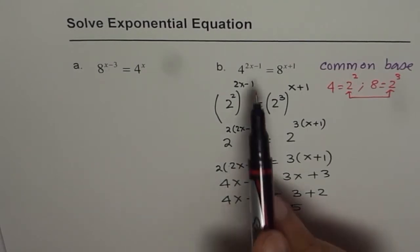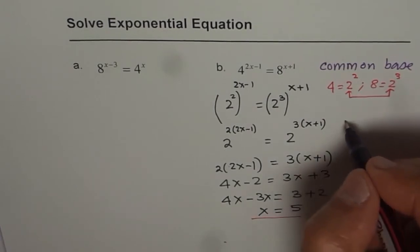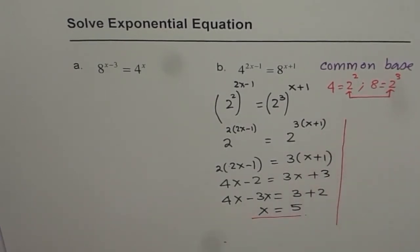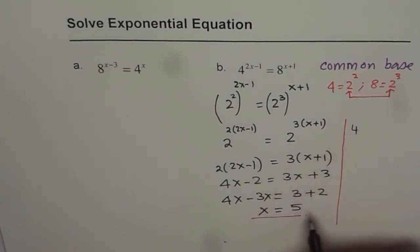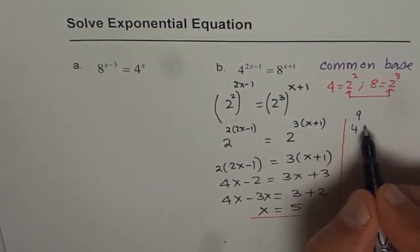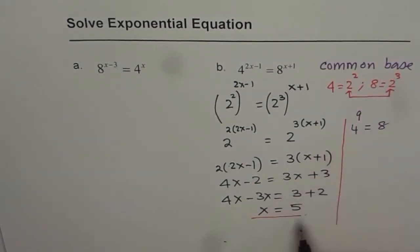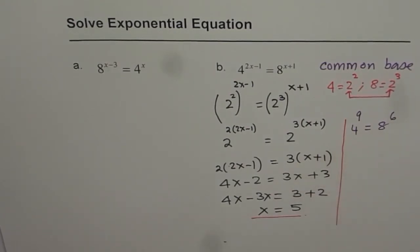Now it's a good idea to place 5 here and check your answer. You can always place the value back into the equation. What you get here? You get 4 to the power of, if you put 5 for x, then 5 times 2 is 10 minus 1 is 9, equals 8 to the power of 5 plus 1, 6. That gives you 4 to the power of 9 equals 8 to the power of 6.